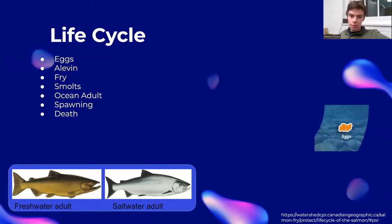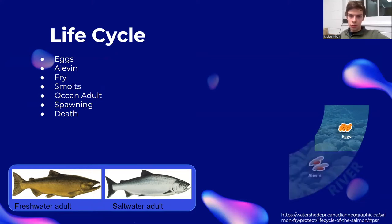Eggs are laid in streams or lakes near the shore. The salmon will dig a small nest, called a redd, in the sand to lay their eggs in. Upon hatching, the fish are called alevin. They have small yolk sacs still attached to their ventral sides, and do not leave the boundary of the redd.